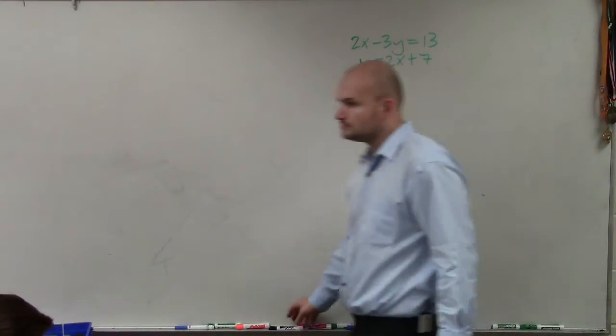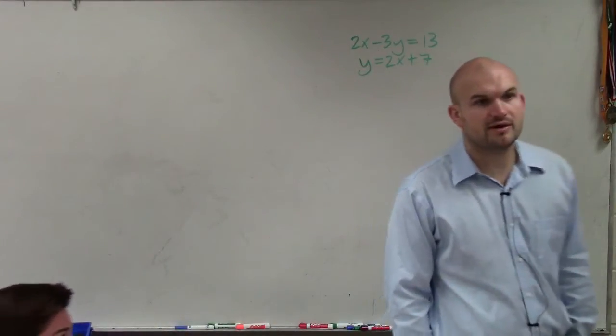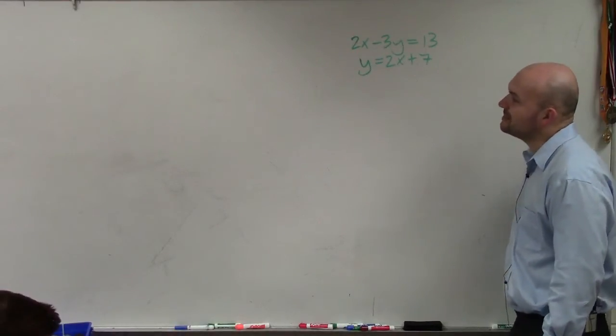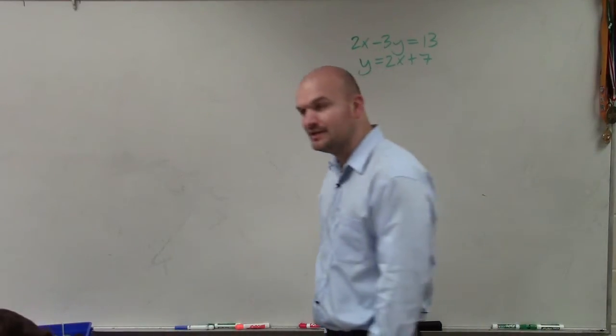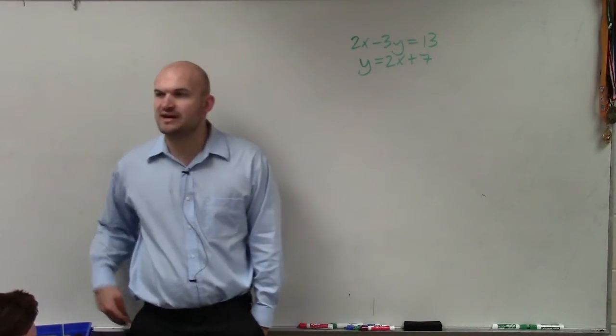Next example, what I like to do is go over - I'm doing that right now. So in this case I have 2x minus 3y equals 13, and the other equation that I have is y equals 2x plus 7.